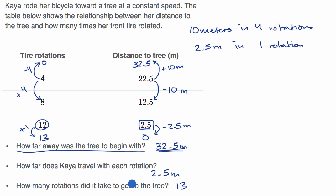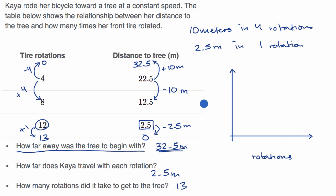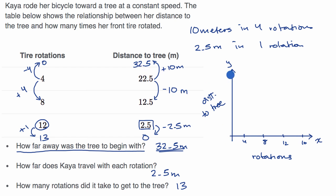It's interesting to think about what we just did in a graphical context. If we put rotations on the horizontal x-axis and distance to the tree on the vertical y-axis, we can plot the data at 0, 4, 8, 12, and 16 rotations. At zero rotations, we are 32.5 meters from the tree. So the first question was really asking for the y-intercept.